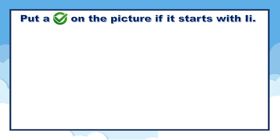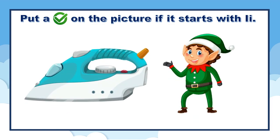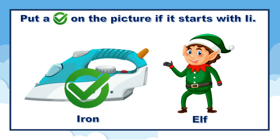Let's play this game. Put a check mark on the picture if it starts with letter I. Here we have two pictures. Which of these pictures begin with letter I? Is it the first one or the second one? That's right, the first one — I for iron.